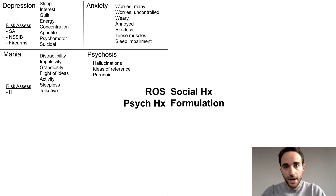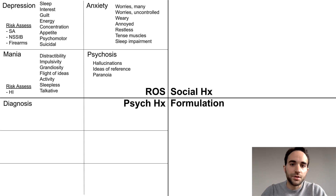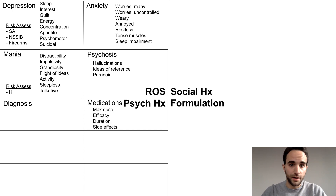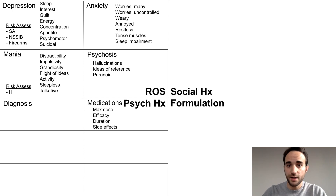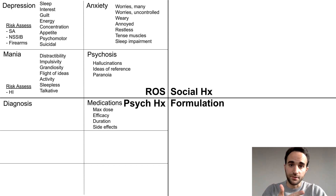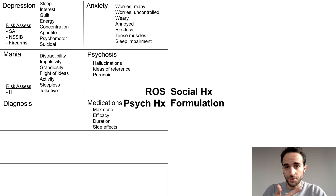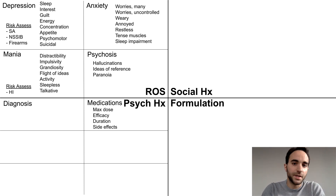Next, we'll move to the bottom left with the psychiatric history. In this section, you should ask about prior psychiatric diagnoses and prior psychiatric medication trials. You can use the mnemonic MEDS to ask about some of the more useful aspects of a prior medication trial, including the maximum dose that the patient ever received, the efficacy of the treatment or how effective it seemed to be in treating the patient's symptoms, the duration of treatment or how long they were taking the medication, and any side effects of the treatment.